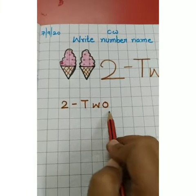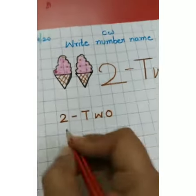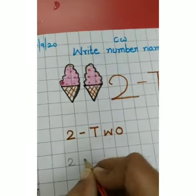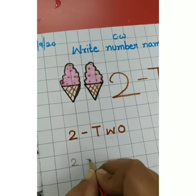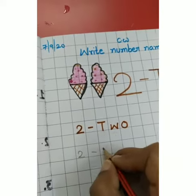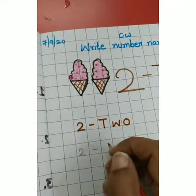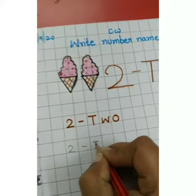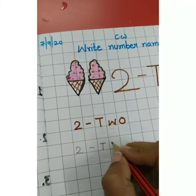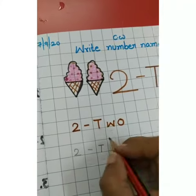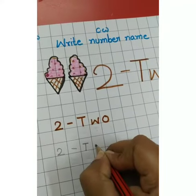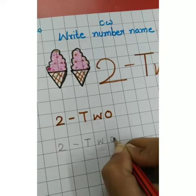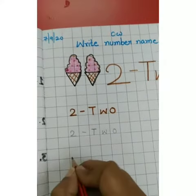T-W-O, 2. Write here 2. Your first letter should be capital. Write here capital T. And the next second letter should be small — small w. Small o. T-W-O, 2.